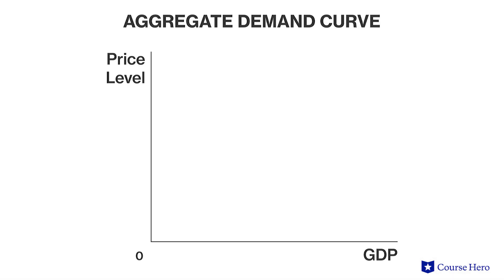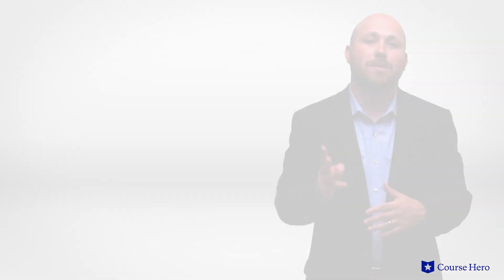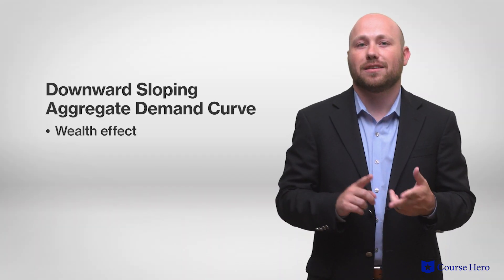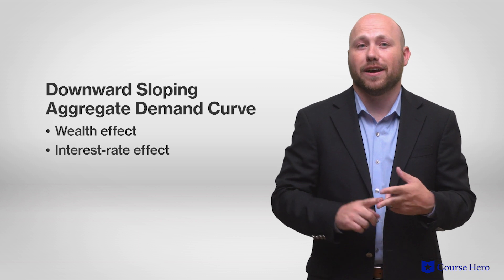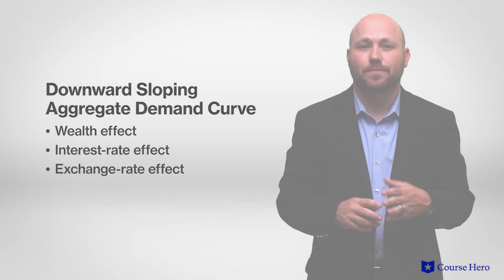Graphically, the aggregate demand curve depicts an inverse or negative relationship between the overall price level and GDP for three main reasons: the wealth effect, the interest rate effect, and the exchange rate effect.